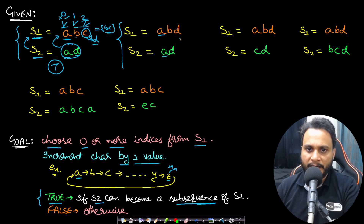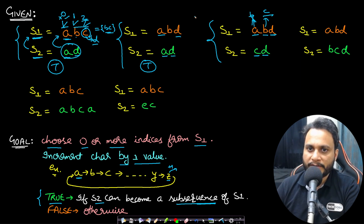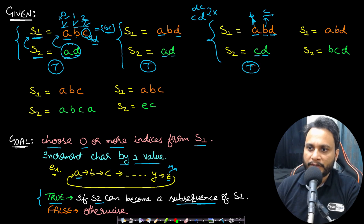In Example 2, 'a' and 'd' both match directly as a subsequence, so return true directly. In Example 3, 'd' and 'd' are matching. 'a' cannot be matched with 'c' because even incrementing 'a' by 1 gives 'b', not 'c'. Instead, making 'b' into 'c' allows that 'c' and 'c' to match, and then 'd' and 'd' match. Remember that in a subsequence the ordering matters — you cannot match 'cd' with 'dc'. So the answer is true again.